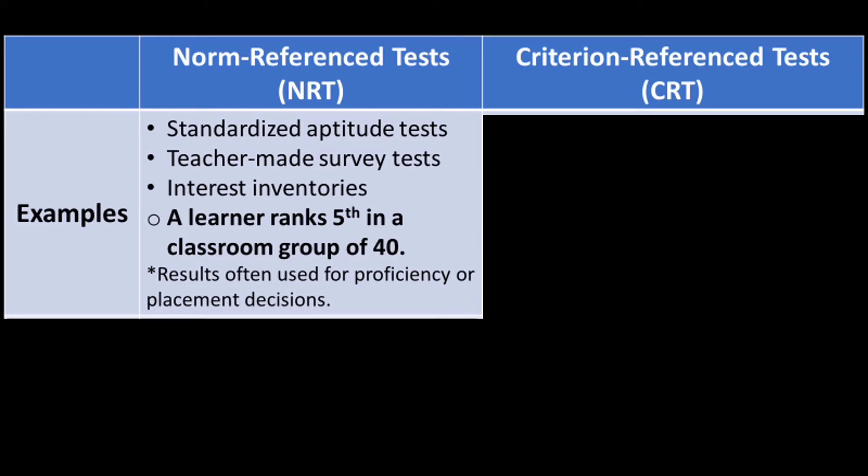Examples of Norm Reference Tests are Standardized Aptitude Tests, Teacher-Made Survey Tests, and Interest Inventories. An example of interpreting a result: a learner ranks fifth in a classroom group of 40. Results are often used for proficiency or placement decisions.